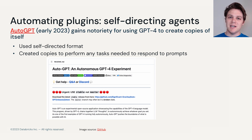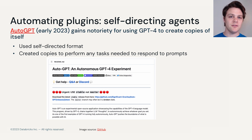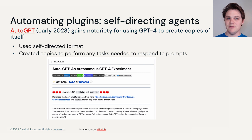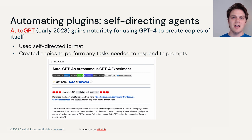If we want to take this to an extreme level, we can actually give the LLM more autonomous abilities and allow it to create copies of itself so that it can solve tasks given just a small amount of prompting. In the early months of 2023, a new repo was created under the name AutoGPT. AutoGPT uses GPT-4 to create clones of itself and delegates tasks to these copies so that it can solve truly complicated and fascinating tasks with just a natural language prompt.